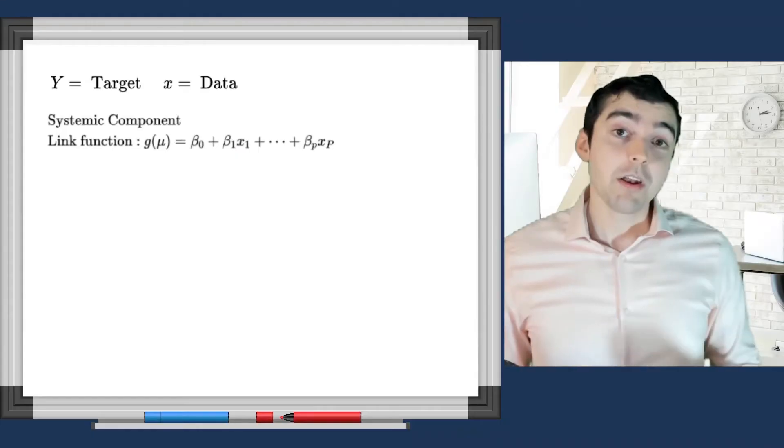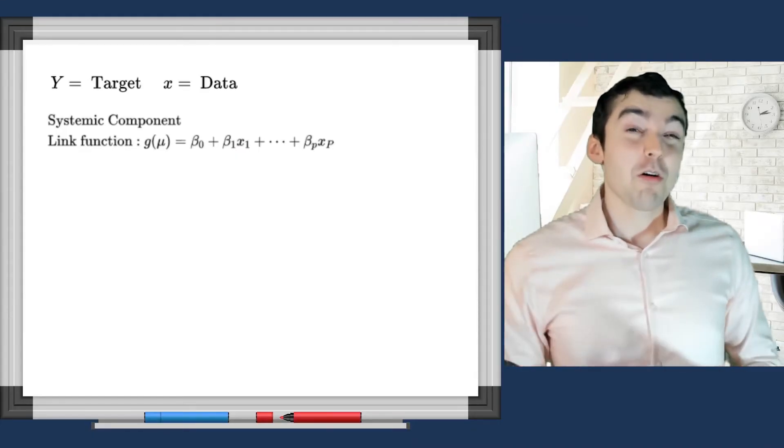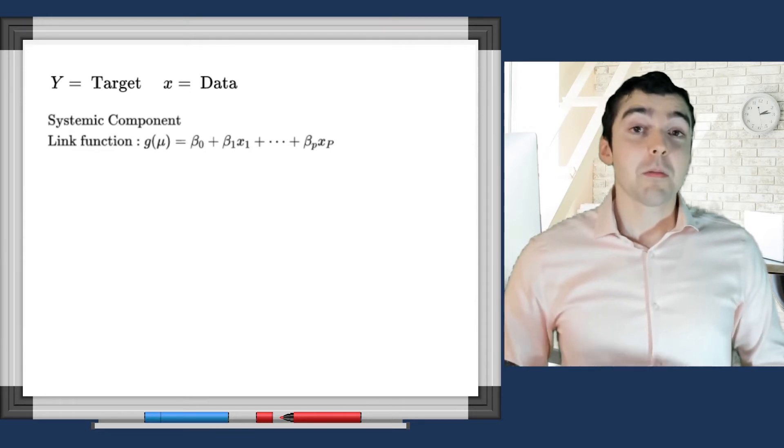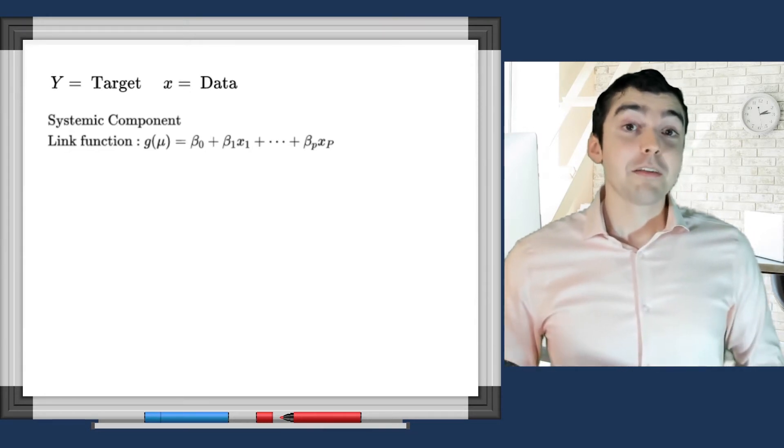GLMs are called generalized because GLMs expand upon this narrow definition by these two items. Item number one, the coefficients now relate to the mean through a link function.